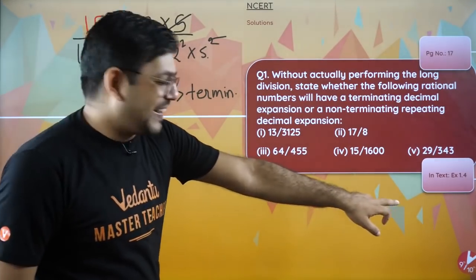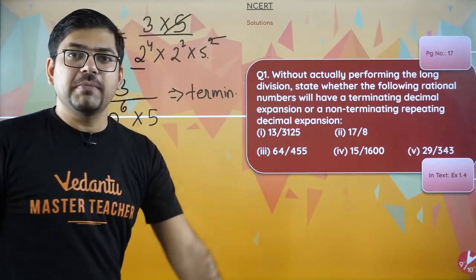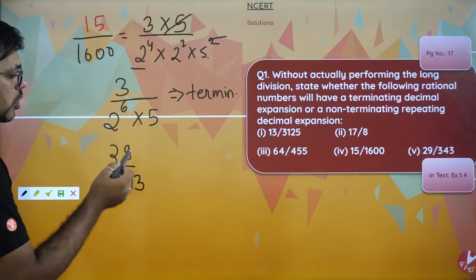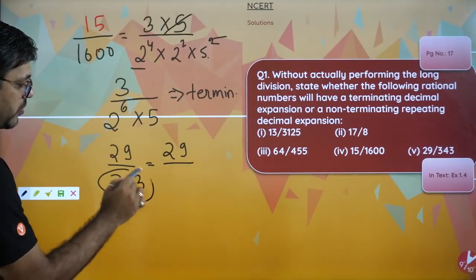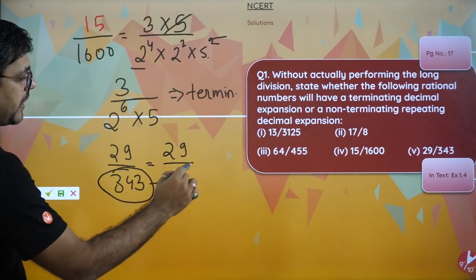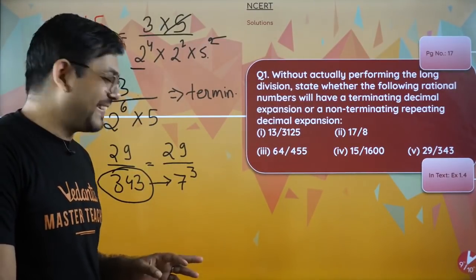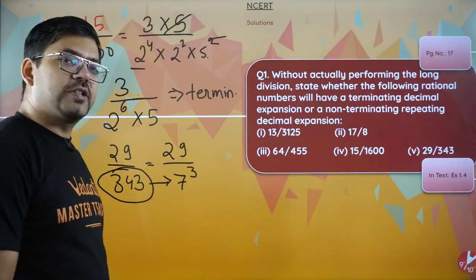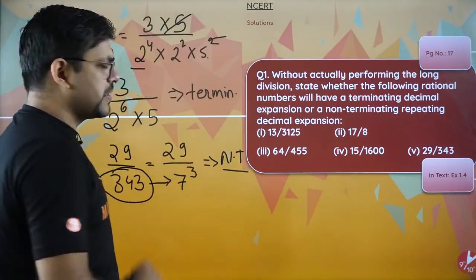Let's talk about the next one, the fifth one. 29 by 343. If I have 29 by 343, 29 is a prime number. If I talk about 343, you will find that this is 7 cube. 7 cube is obviously not from the family of 2 or 5, so if it's not from the family, this means it is going to give us non-terminating decimal. Simple.